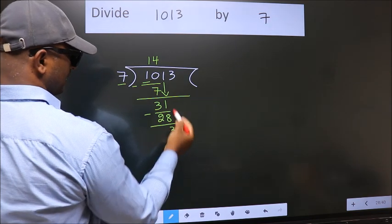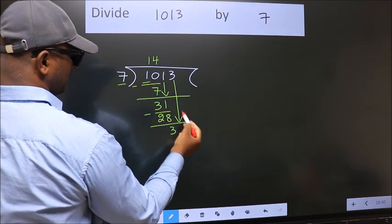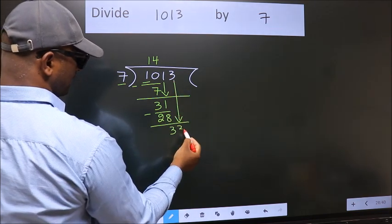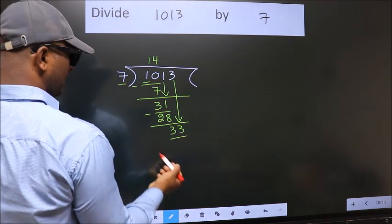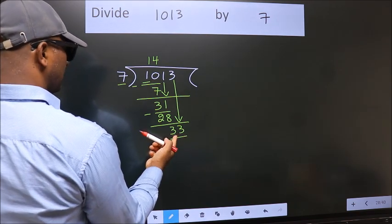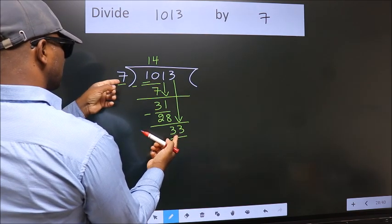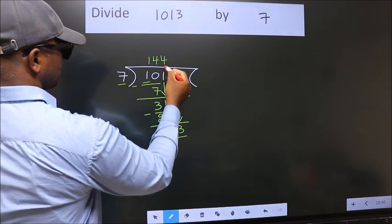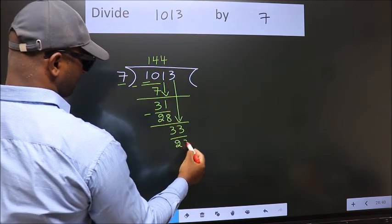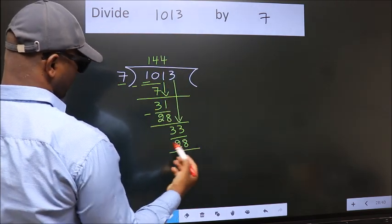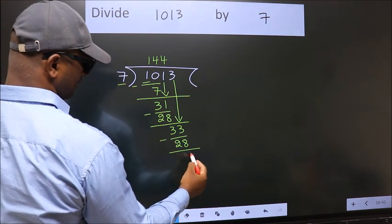After this, bring down the beside number. So, 3 down. So, 33. A number close to 33 in the 7 table is 7 fours, 28. Now we subtract. We get 5.